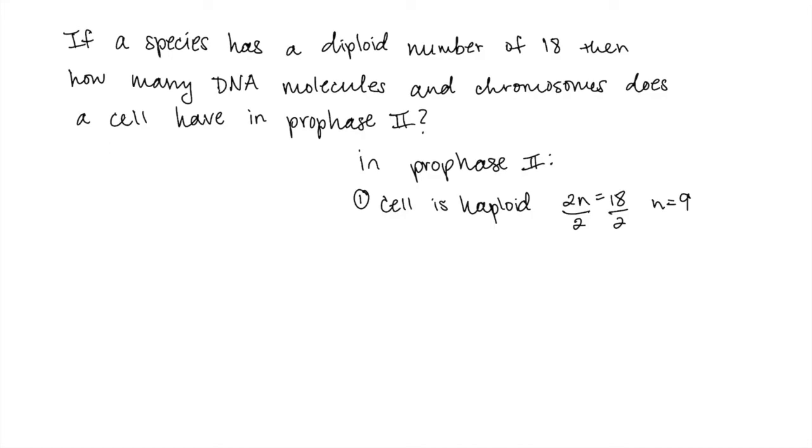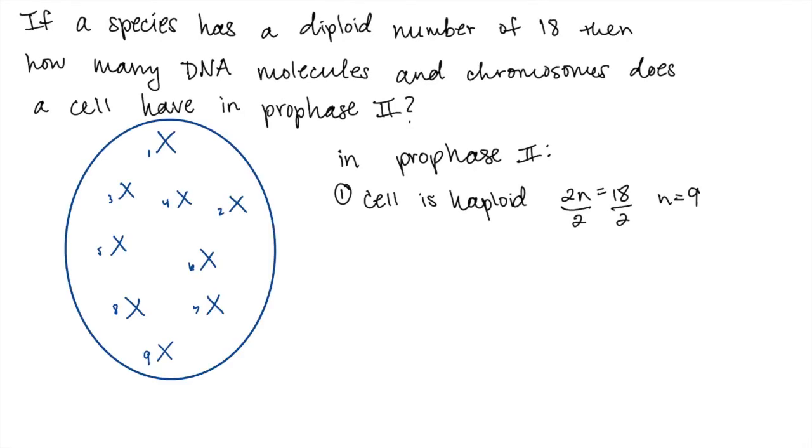So therefore, there are 9 chromosomes in the cell. And we can draw this out.